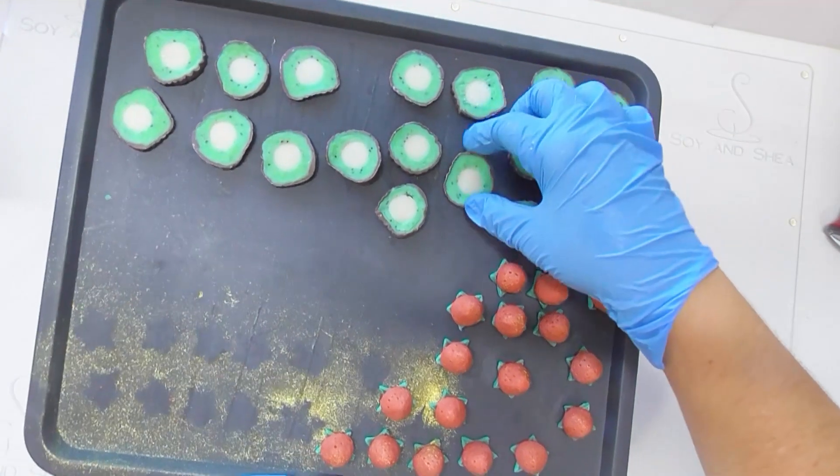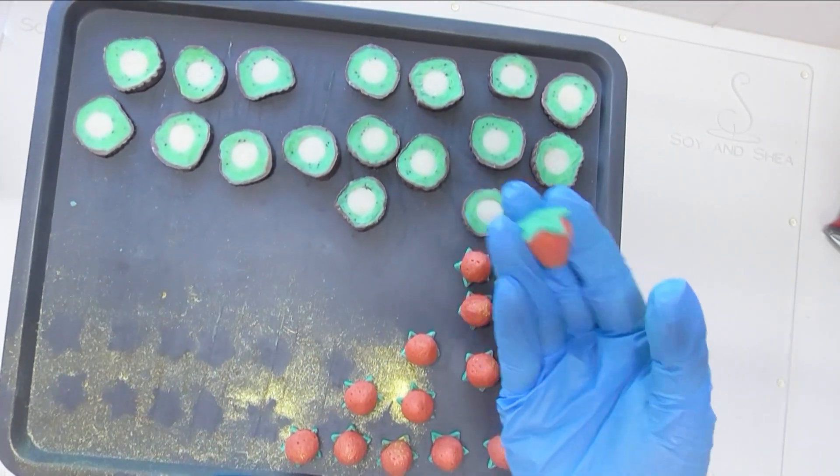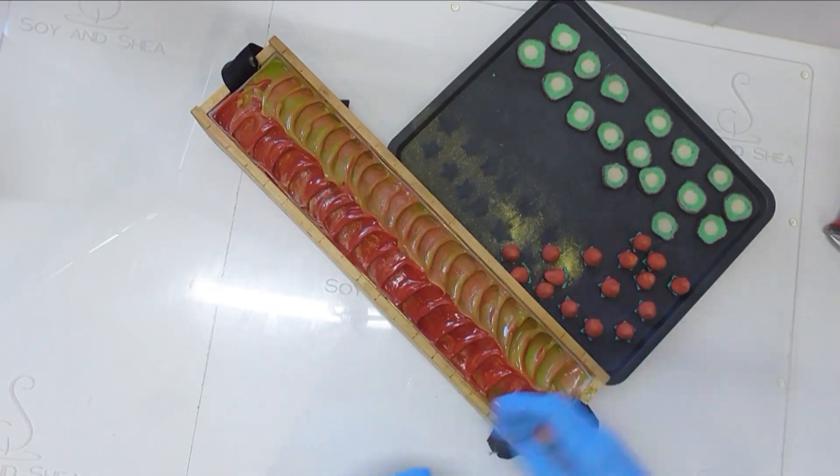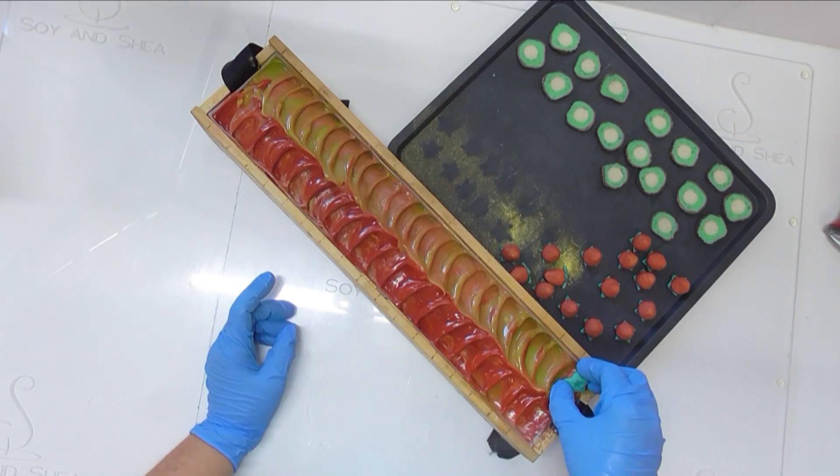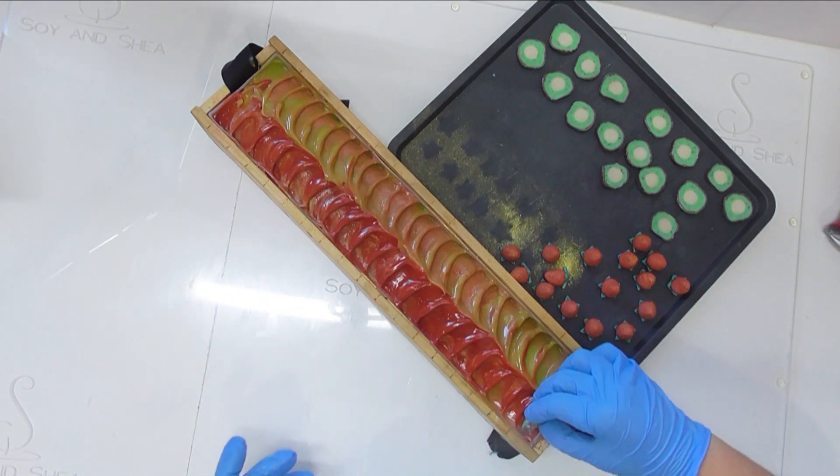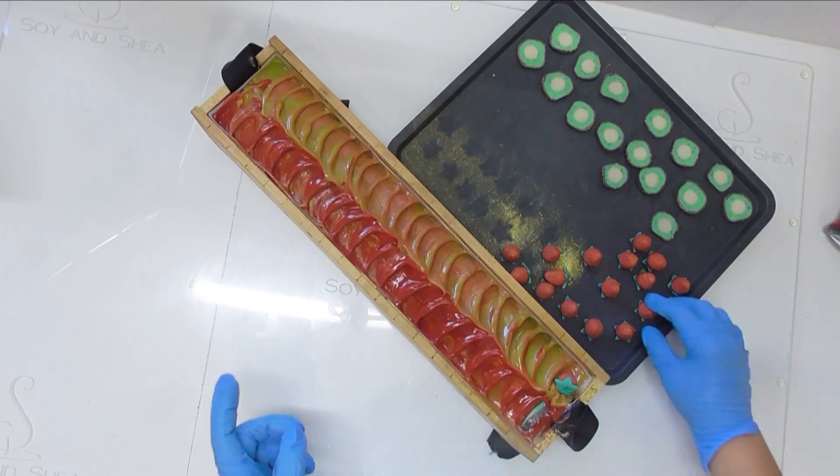Right, to decorate the top we have some little kiwi pieces and I also have some little strawberries. I made these in the behind the scenes video this week and I'll leave a link up in the top right hand corner for you. All I'm going to do is place a strawberry on each side and a little kiwi piece on the opposite side as well.